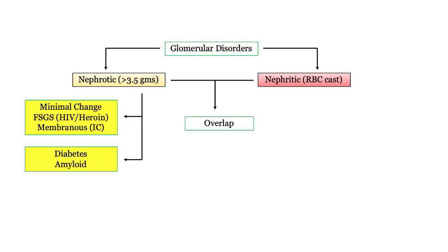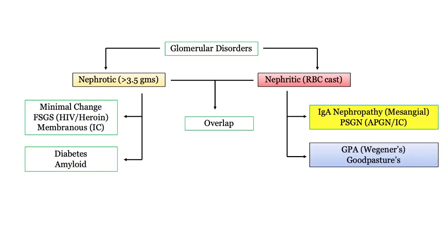The nephrotic disorders include the primary disorders of minimal change, focal segmental glomerulosclerosis, and membranous nephropathy. They each have distinguishing features, including HIV infection and IV heroin use with focal segmental, and immune complex deposition in membranous. The systemic nephrotic disorders include diabetes and amyloid, reviewed elsewhere. The nephritic disorders include IgA nephropathy versus post-streptococcal glomerulonephritis, and GPA versus Goodpasture's, which are the focus of this and the previous video.